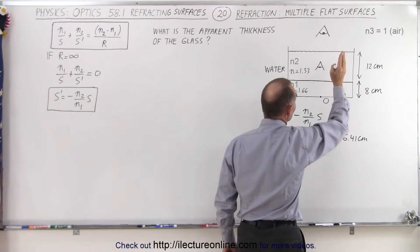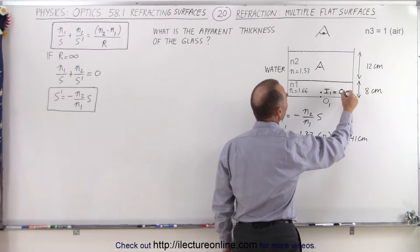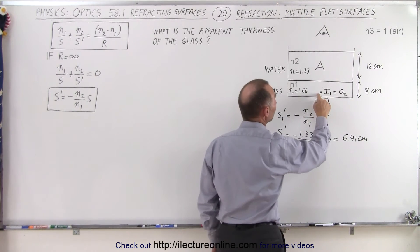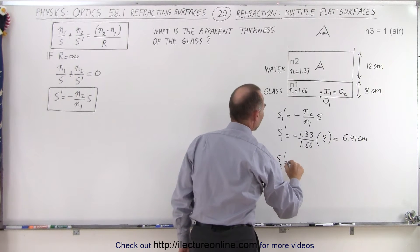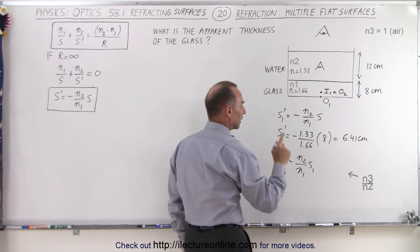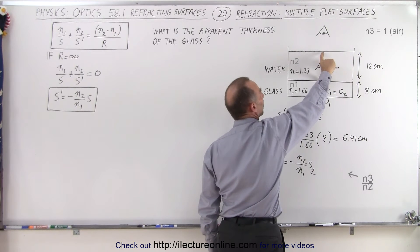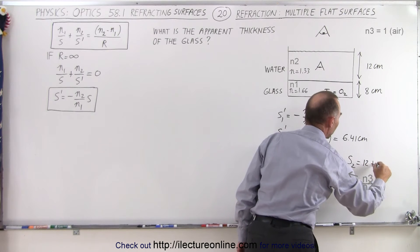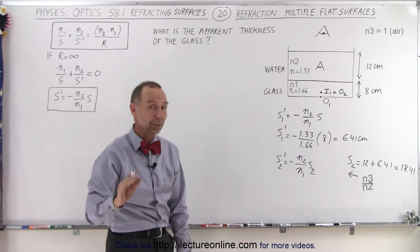As seen by the observer above, that's a different story. We place image 1 at 6.41 cm and make it into object 2. We now look at it from the top surface of the water. The total object distance S2 is the thickness of the water — 12 centimeters — plus the apparent thickness of the glass, 6.41 centimeters, giving 18.41 centimeters.